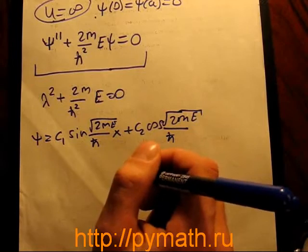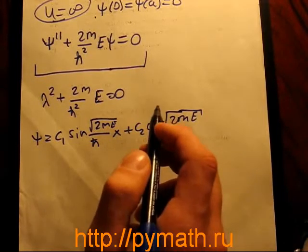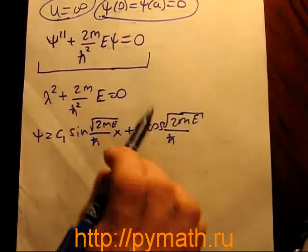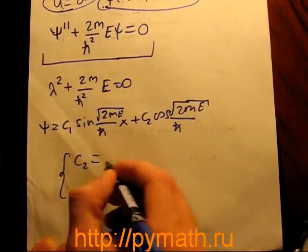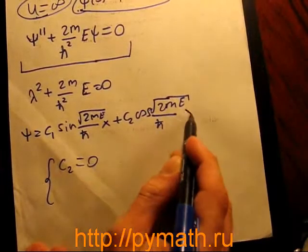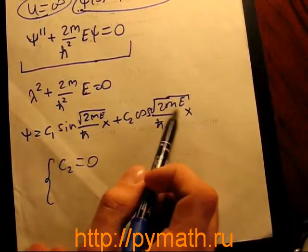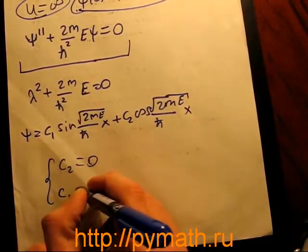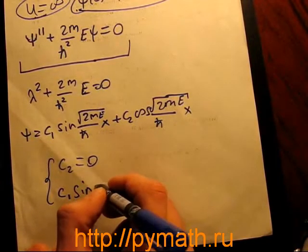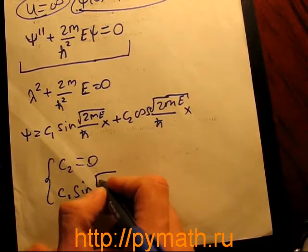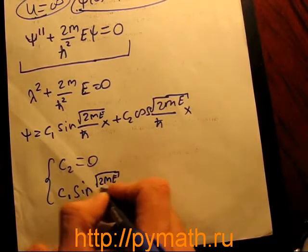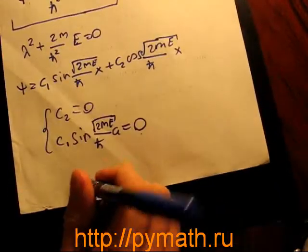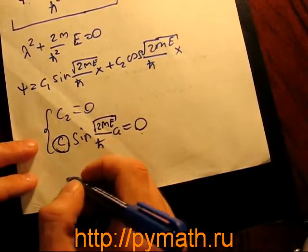Then I can identify from these boundary limitations that c₂ equals 0, and then I'll find that sin(√(2mE)/ℏ · a) = 0. If you want to build some wave function, this constant cannot be equal to 0.